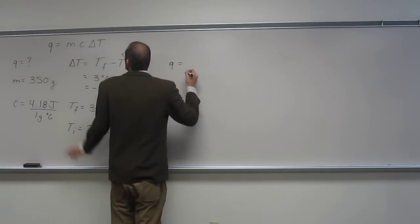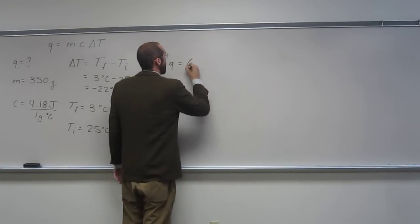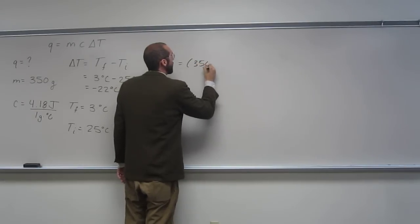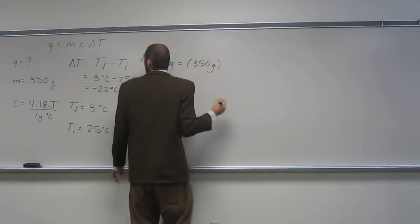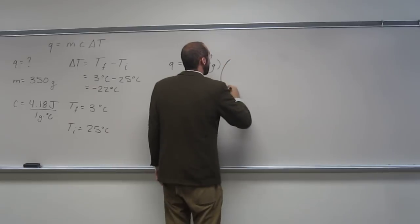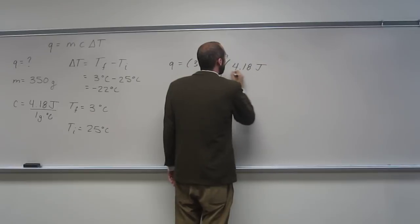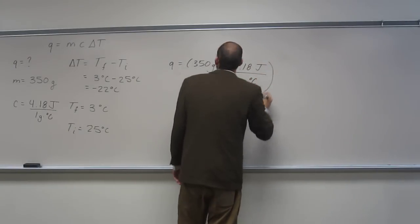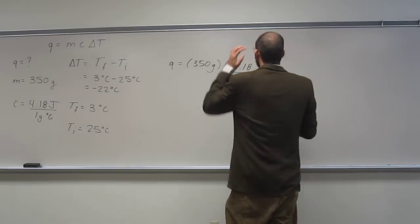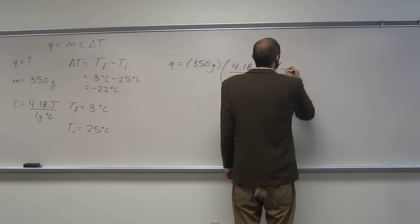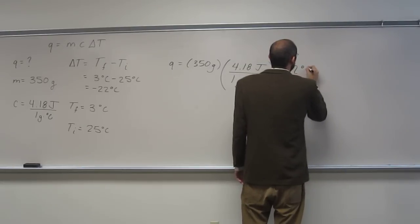So Q equals M, which in this case is 350 grams, times C, 4.18 joules per 1 gram times degrees C, times delta T, negative 22 degrees C.